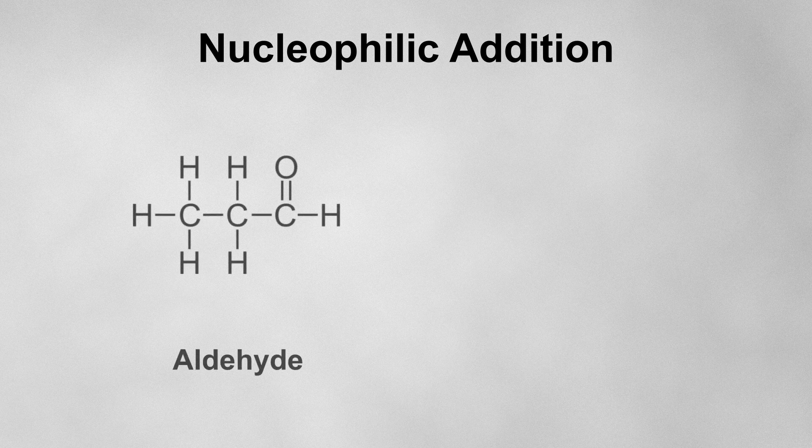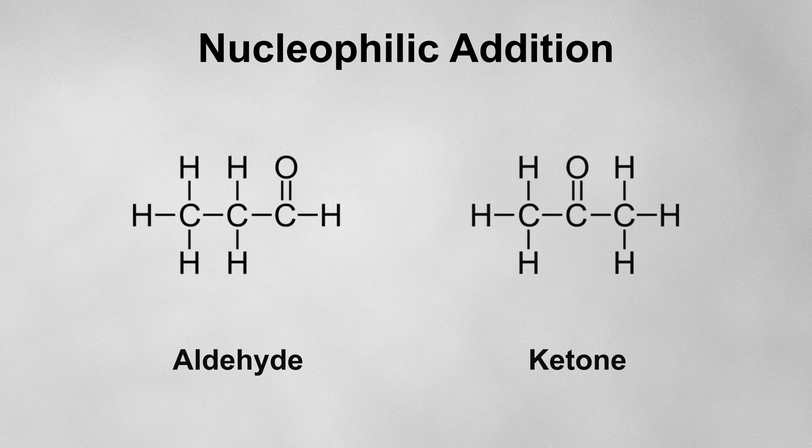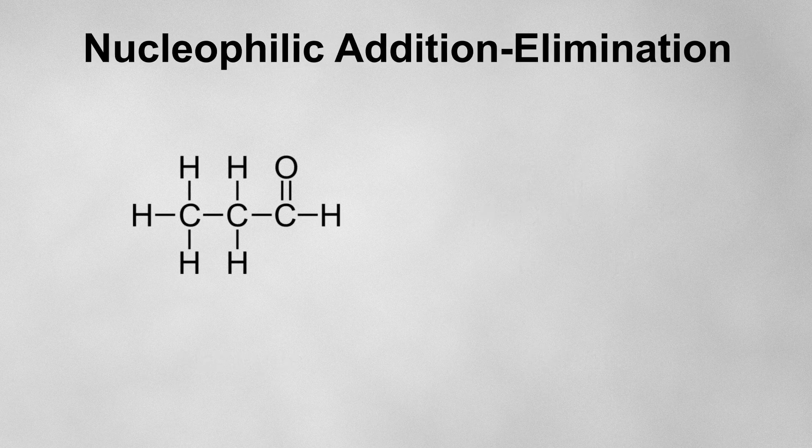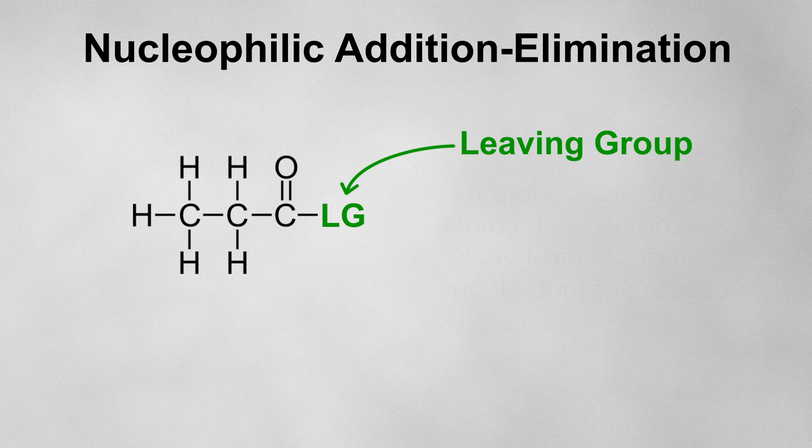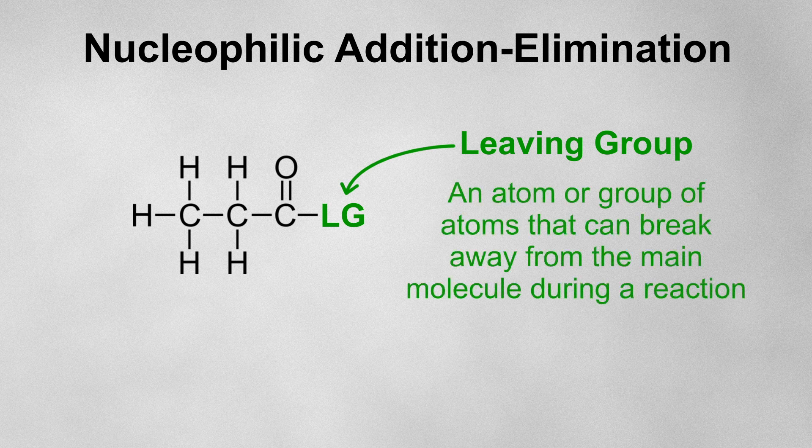Regular nucleophilic addition occurs at a carbonyl in an aldehyde or a ketone. Nucleophilic addition-elimination occurs when the carbon in the carbonyl is also bonded to a leaving group. A leaving group is an atom or group of atoms that can break away from the main molecule during a reaction.